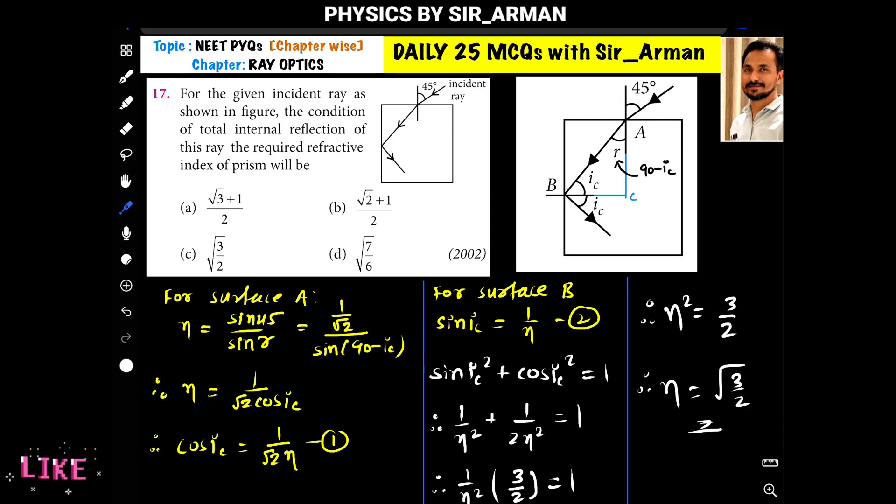For the given incident ray as shown in figure, the condition of total internal reflection of this ray, the required refractive index of the prism will be? As per the given question, a ray is incident from rarer to denser because it is bending towards the normal. So angle of incidence is 45 degrees and angle of refraction is r.